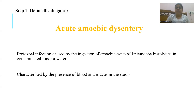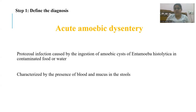Acute amoebic dysentery is a protozoal infection caused by the ingestion of amoebic cysts of Entamoeba histolytica in contaminated food or water from an affected patient. It is characterized by the presence of blood and mucus in the stools, and this is a known case of acute amoebic dysentery.